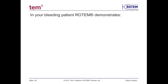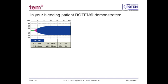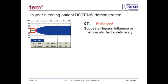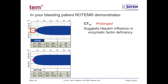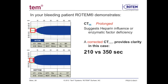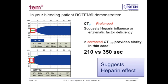For a bleeding patient where a Rotem analysis was run using the Intem assay, the CT demonstrates a prolongation indicating impairment in thrombin generation. This can be due to either an enzymatic factor deficiency or possibly heparin, since it is affecting the intrinsic pathway. A Heptem test was run to determine the cause. A corrected CT in Heptem compared to a prolonged CT in Intem positively identifies the heparin effect, and therefore additional heparin reversal would be beneficial.